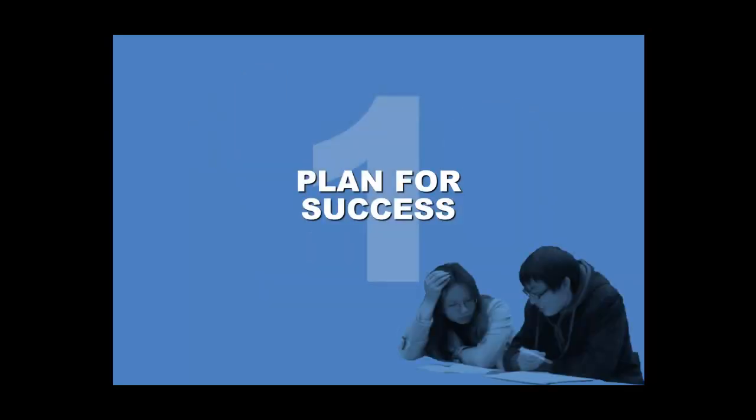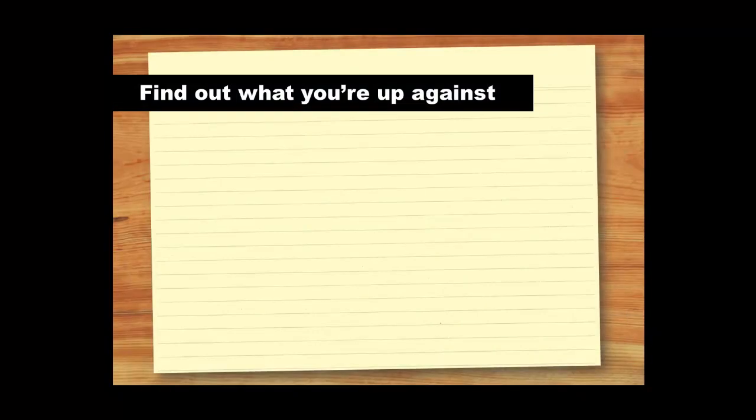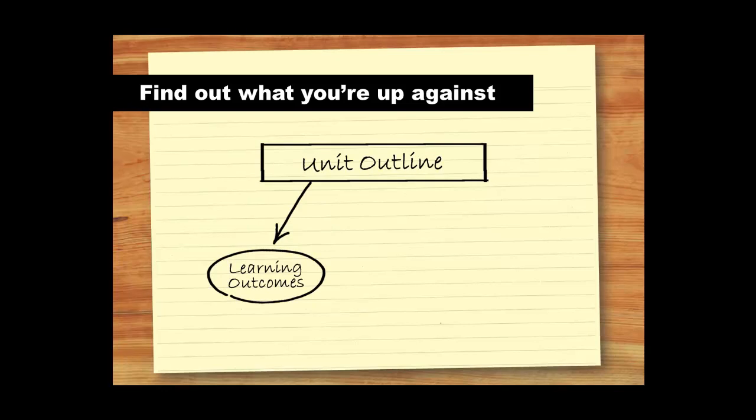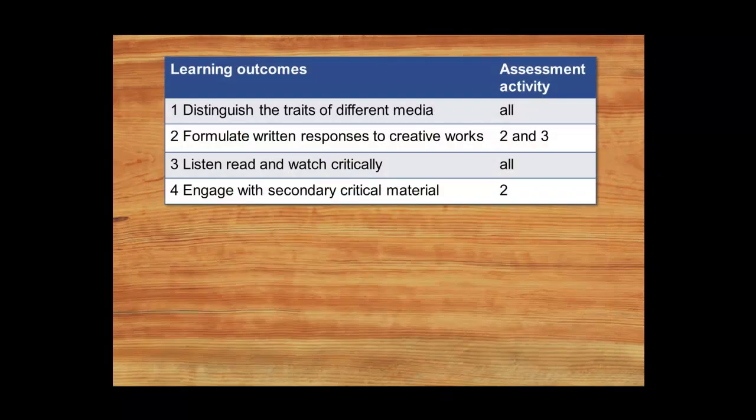Let's start with planning for success. Before revising you need to identify what you're up against. You should carefully examine your unit outline, paying close attention to the learning outcomes—that is what you are supposed to know and be able to do by the end of the unit. It is also useful to determine how much each exam is worth for each of your units. Here is an example of how the learning outcomes may appear in your unit outline. You need to consider what each of them require you to know or do and how they relate to the course content.